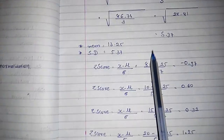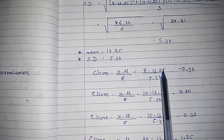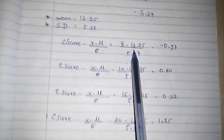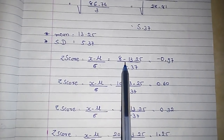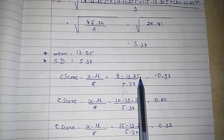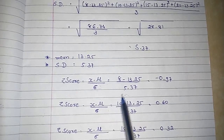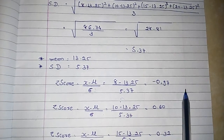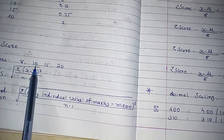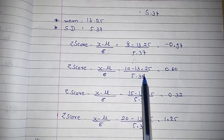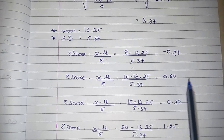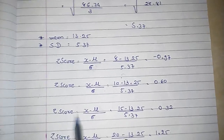For the first value, which is 8, mu is your mean. So you perform the subtraction: 8 minus 13.25 upon 5.37, where 5.37 is your standard deviation. You will get minus 0.97. For the next value, 10: 10 minus 13.25 upon 5.37, which equals negative 0.60.